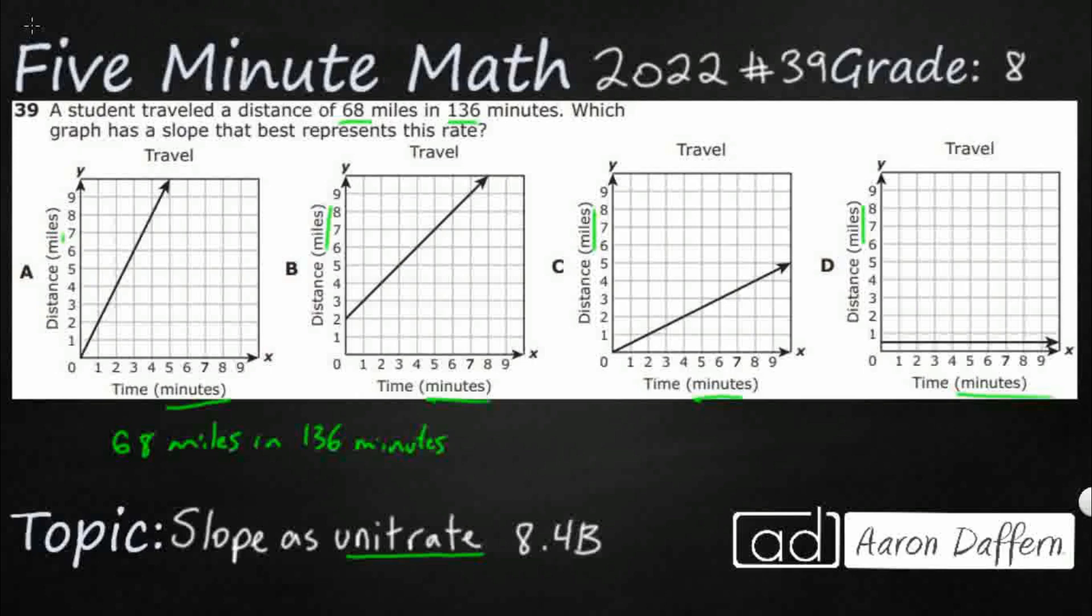If we see the 68 miles in 136 minutes, all you need to do is flip it. Let's rotate it and you're going to see 68 miles in 136 minutes. If we were to view this as a fraction, that could help us get a unit rate. So let's view that as a fraction and see if we can simplify it. They're both even.